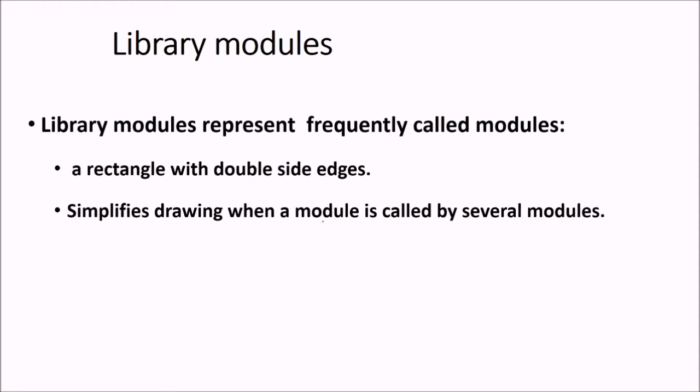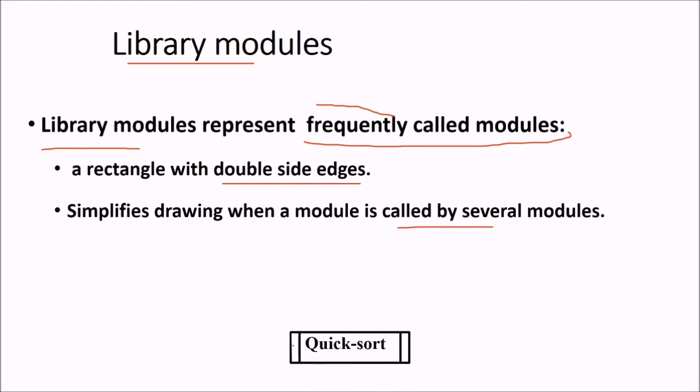What about library modules? These are the modules which will be frequently used. These library modules represent frequently called modules, frequently employed modules. A rectangle with double side edges will be representing library modules. And this is going to simplify drawing when the module is called by several modules in this way. So this is a library module called as quicksort.